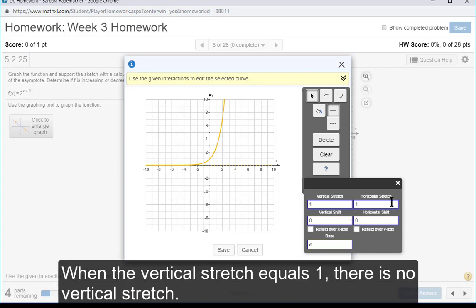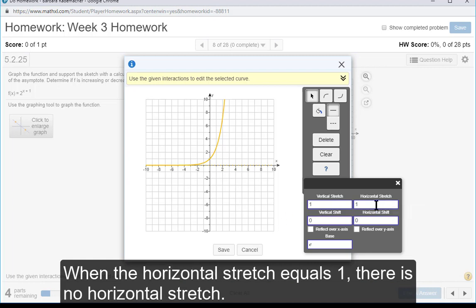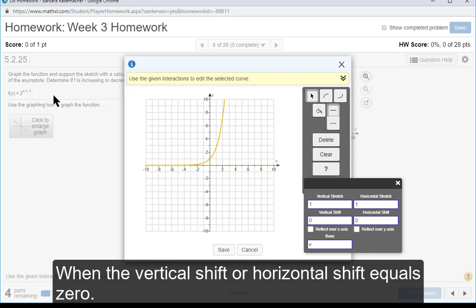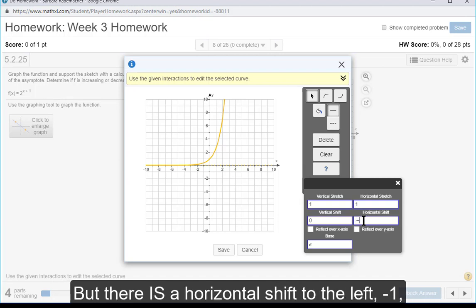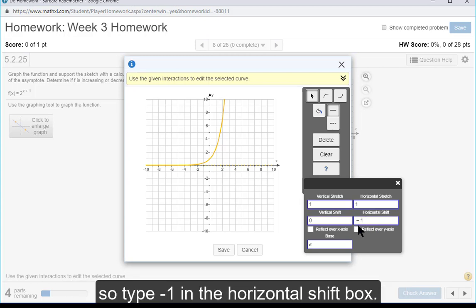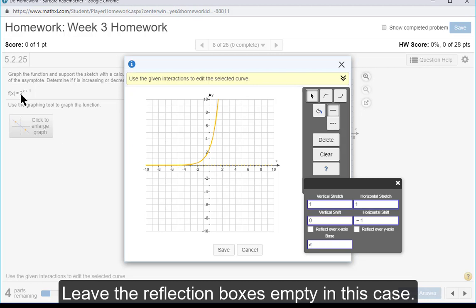Enter the fact in the transformations box. When the vertical stretch equals 1, there is no vertical stretch. Same for the horizontal stretch. When the vertical shift or horizontal shift equals 0, there is not a vertical shift or a horizontal shift. But there is a horizontal shift here of 1 to the left, so type negative 1 in the horizontal shift box.